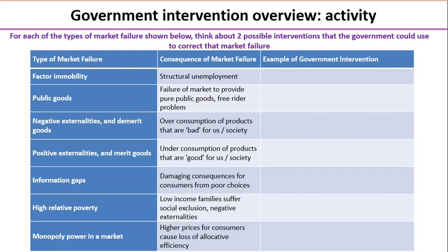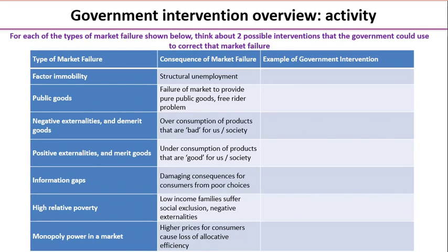For this little activity you're going to need to grab yourself a piece of paper and take a look at the chart on the screen. We've listed on the left hand side a number of types of market failure, and in the middle column a little overview of some of the consequences of that type of market failure and therefore why a government might want to intervene. Take a moment to read through those and then complete the right hand column, thinking about two possible interventions a government could use to correct each market failure.